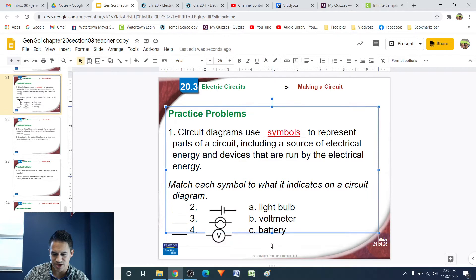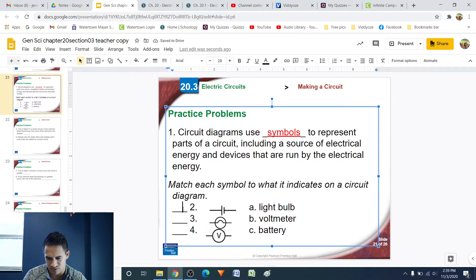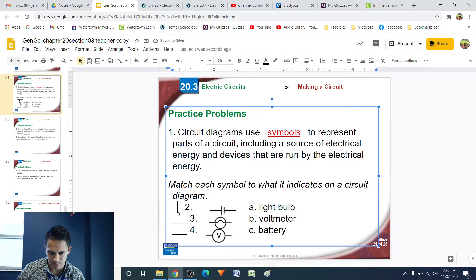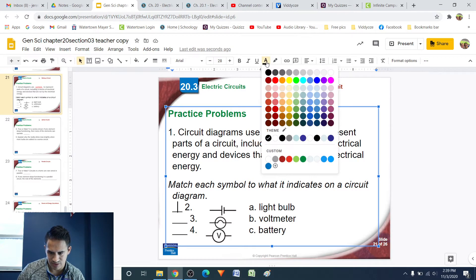Number 2, 3, and 4. It says, match each symbol to what it indicates on a circuit diagram. Alright, so number 2, we have this symbol here. So this is the symbol for a battery. So this is going to be letter C.